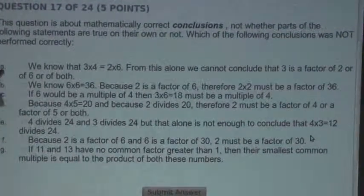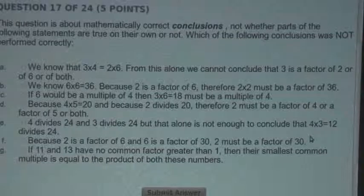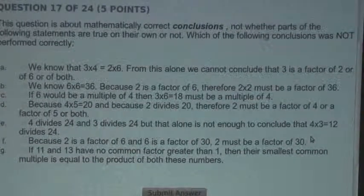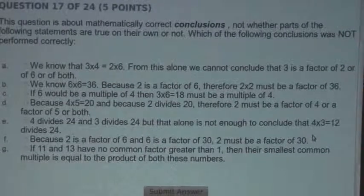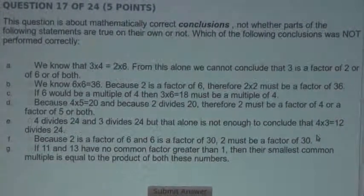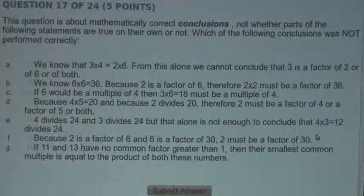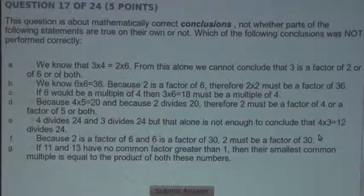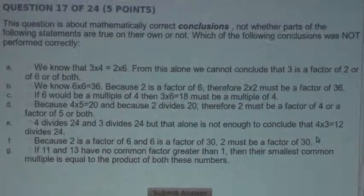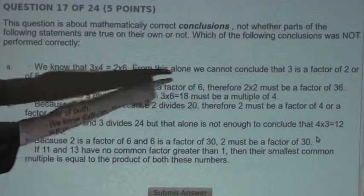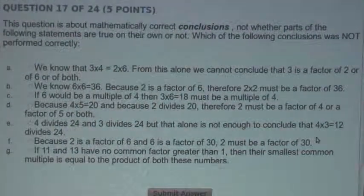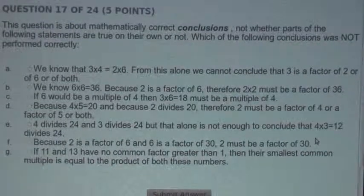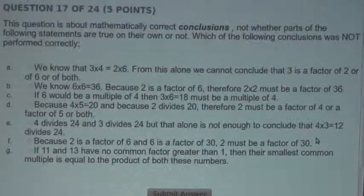So let's take a look at Statement A. We know that 3 times 4 equals 2 times 6. From this alone, we cannot conclude that 3 is a factor of 2, or of 6, or of both. So the opposite statement of A would be that we can conclude that 3 is a factor of 2, or of 6, or of both. So, here's a counterexample of the opposite statement.